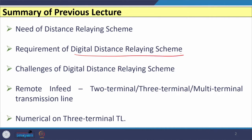However, there are several challenges faced by digital distance relaying schemes as well. The two most important challenges are: first, the remote in-feed, where we discussed three-terminal or multi-terminal transmission lines, and second is series compensation. Out of these two issues, we have already discussed the first one — the impact of remote in-feed on three-terminal or multi-terminal transmission lines.